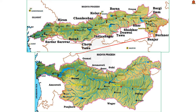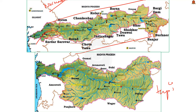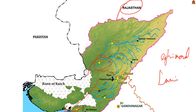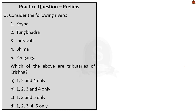The Narmada originates on the western flank of the Amarkantak Plateau at about 1,057 meters. It flows in a rift valley between the Satpura range in the south and the Vindhya ranges in the north; the Sardar Sarovar Project is constructed on this river. The Tapti originates in Multai in the Betul district of Madhya Pradesh and flows through Maharashtra, Madhya Pradesh, and Gujarat before draining into the Arabian Sea. The Luni is the largest river system of Rajasthan, originating near Pushkar and flowing westward before joining the Rann of Kutch. The entire Luni river system is ephemeral. The correct answer is Option A — 1, 2, and 4 only.